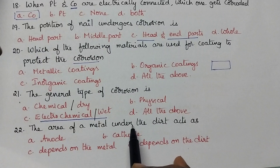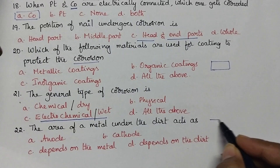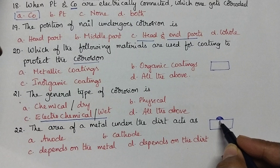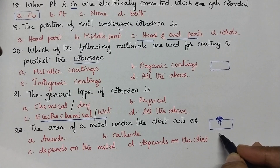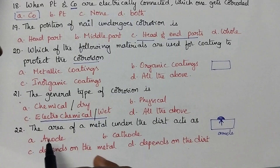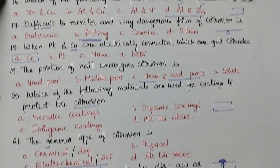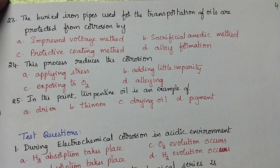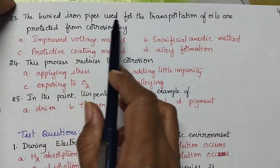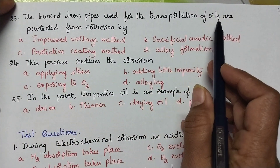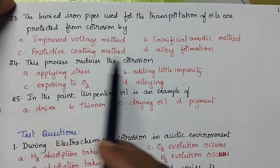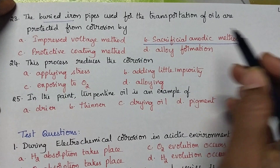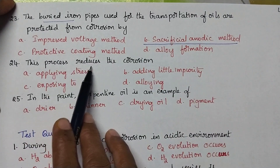The area of a metal under the dirt acts as the anode. Whenever dirt is deposited on any metallic structure, the underlying area becomes the anode. Buried iron pipes used for the transportation of oils are protected from corrosion by sacrificial anodic protection.